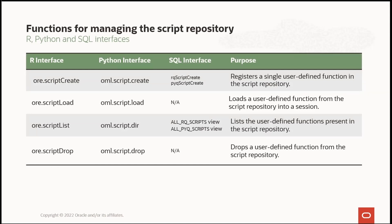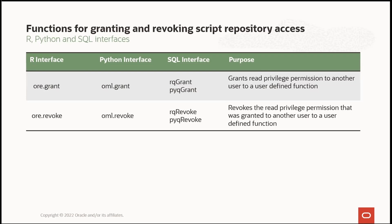Here's the list of functions for managing scripts in the script repository. The create function for R, Python, and SQL registers UDFs into the repository. The load function loads UDFs into the session. The list function lists UDFs in the script repository. And the drop function, available in R and SQL, deletes UDFs from the repository. Additionally, there are grant and revoke functions for R, Python, and SQL: grant gives read privilege permission to another database user for a specified script, and revoke removes that read privilege.